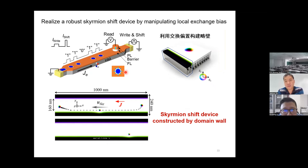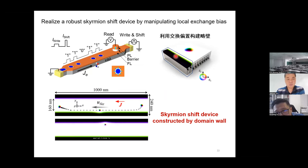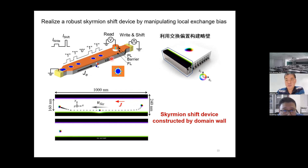Let me discuss how we can utilize this technique. One possibility is to construct a very special device. Since we can manipulate the exchange bias locally, we can construct a domain wall by making the exchange bias on the left pointing down and on the right pointing up, so the magnetization on the left is down and on the right is up. Then we can artificially configure a domain wall, and this domain wall can be used as the device boundary to confine the skyrmion motion — instead of etching out the material to form a physical boundary, we use a domain wall as a boundary.